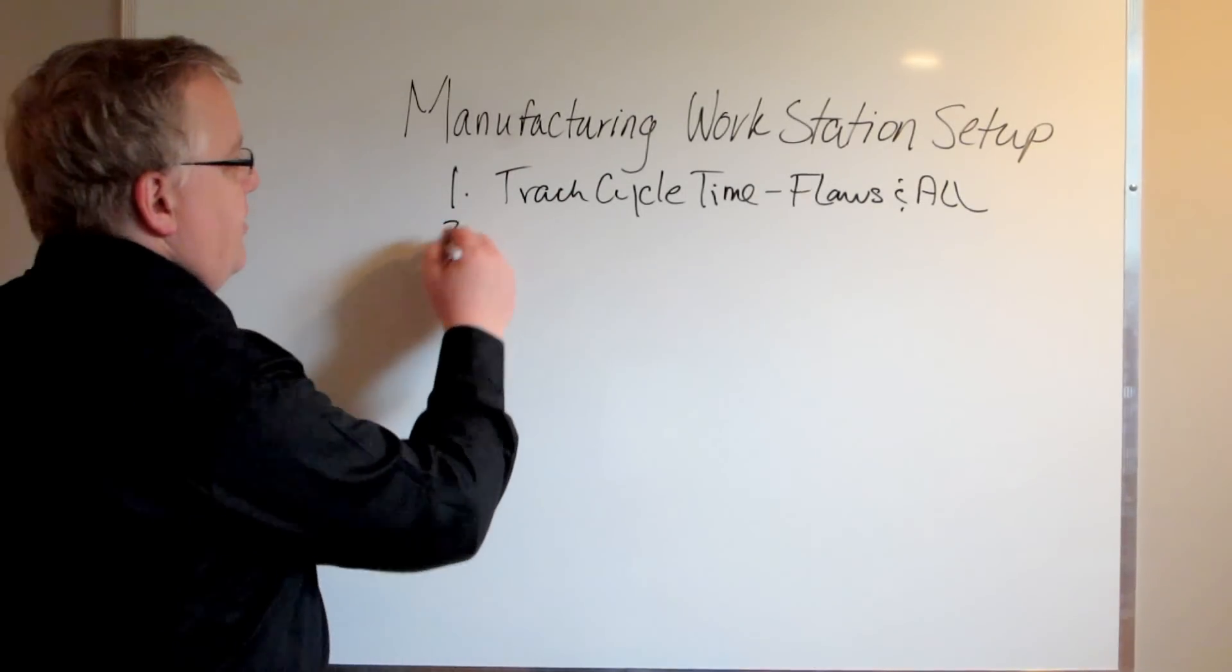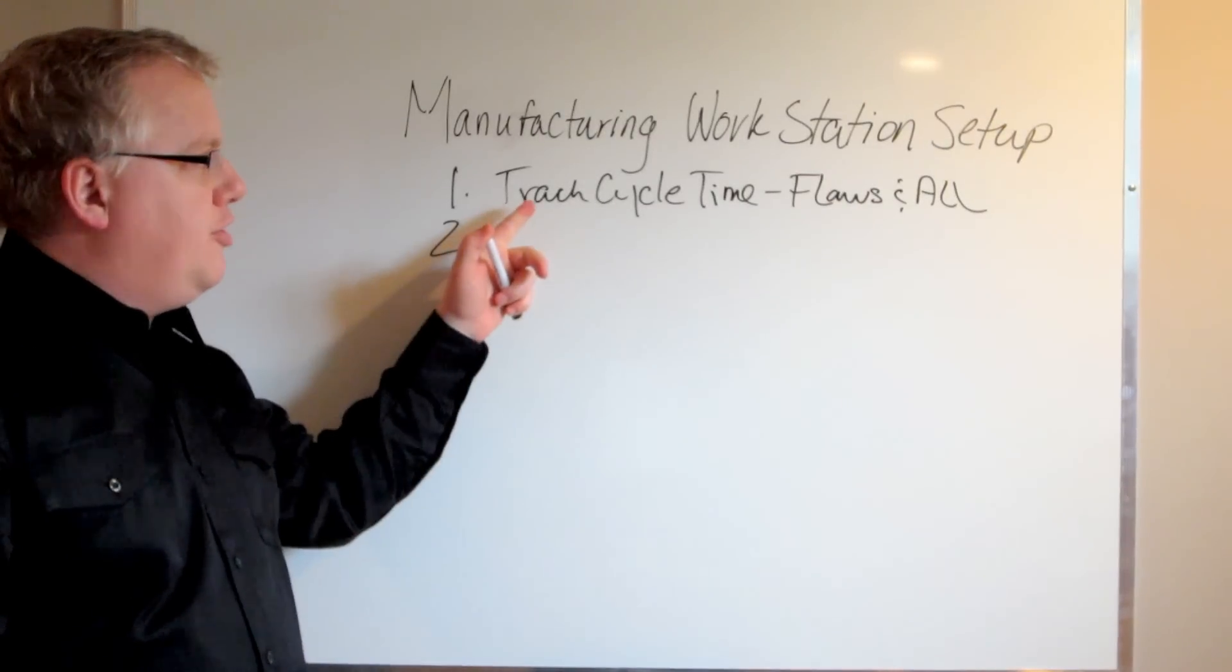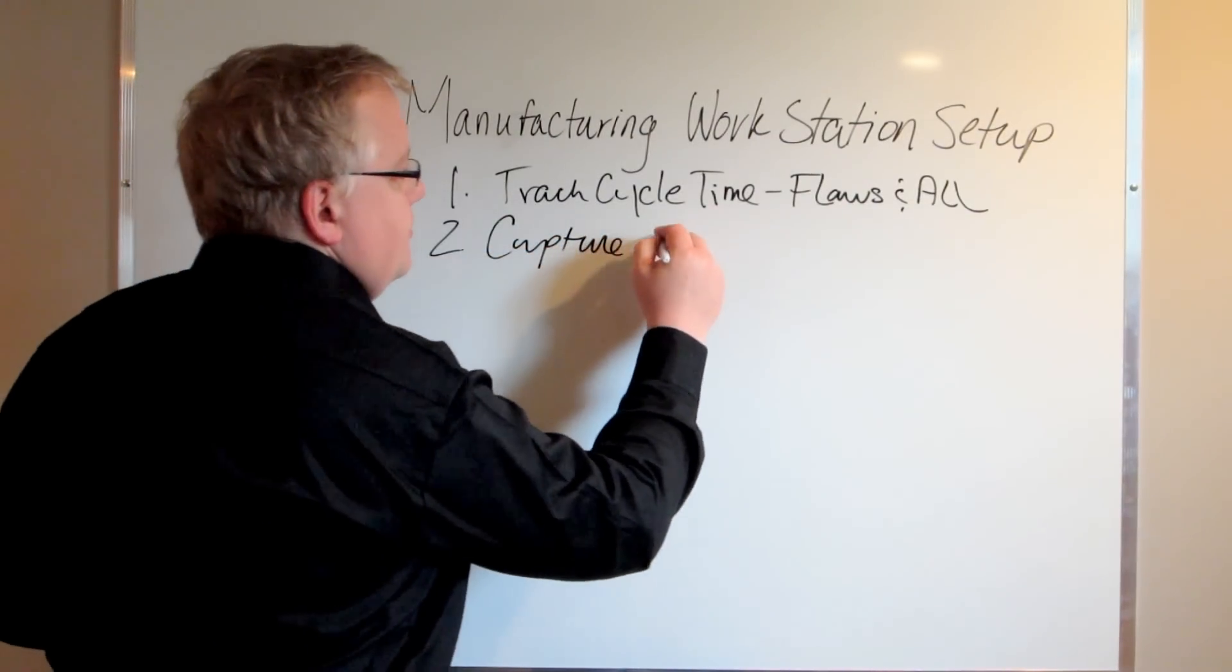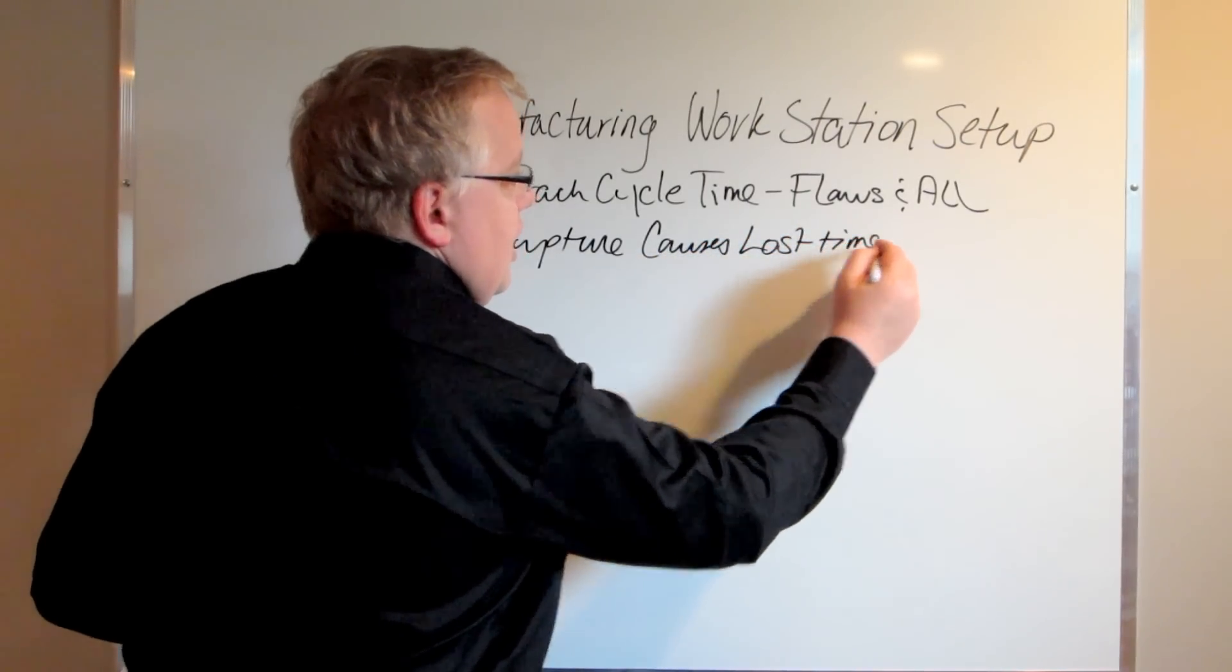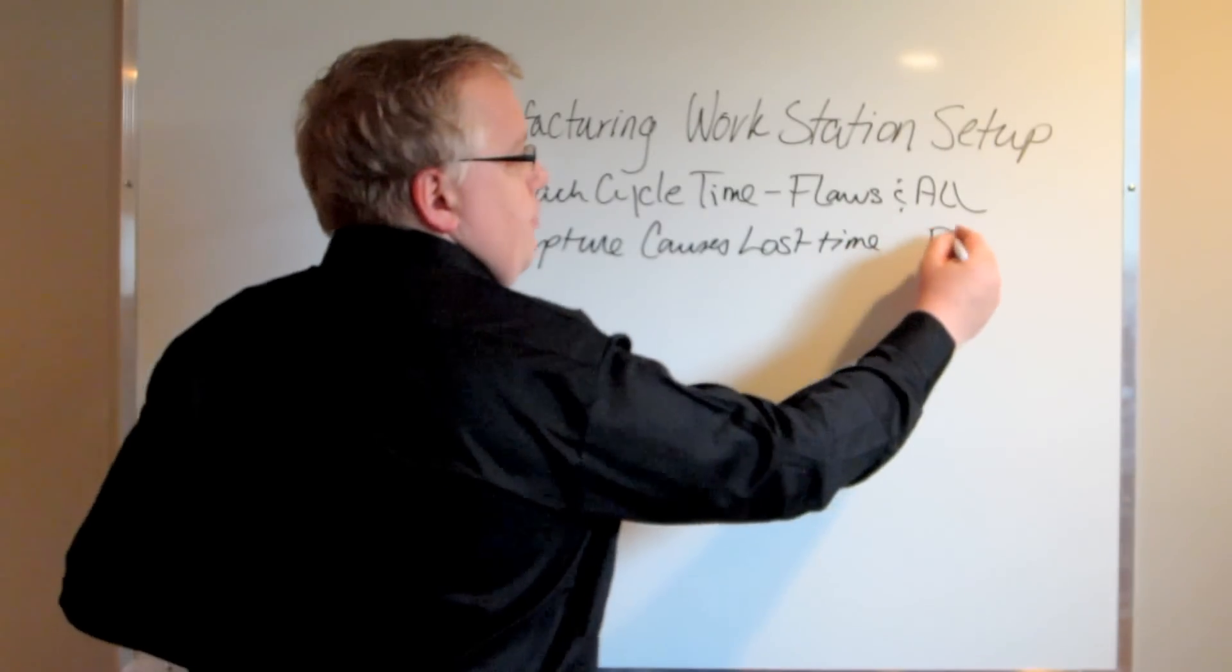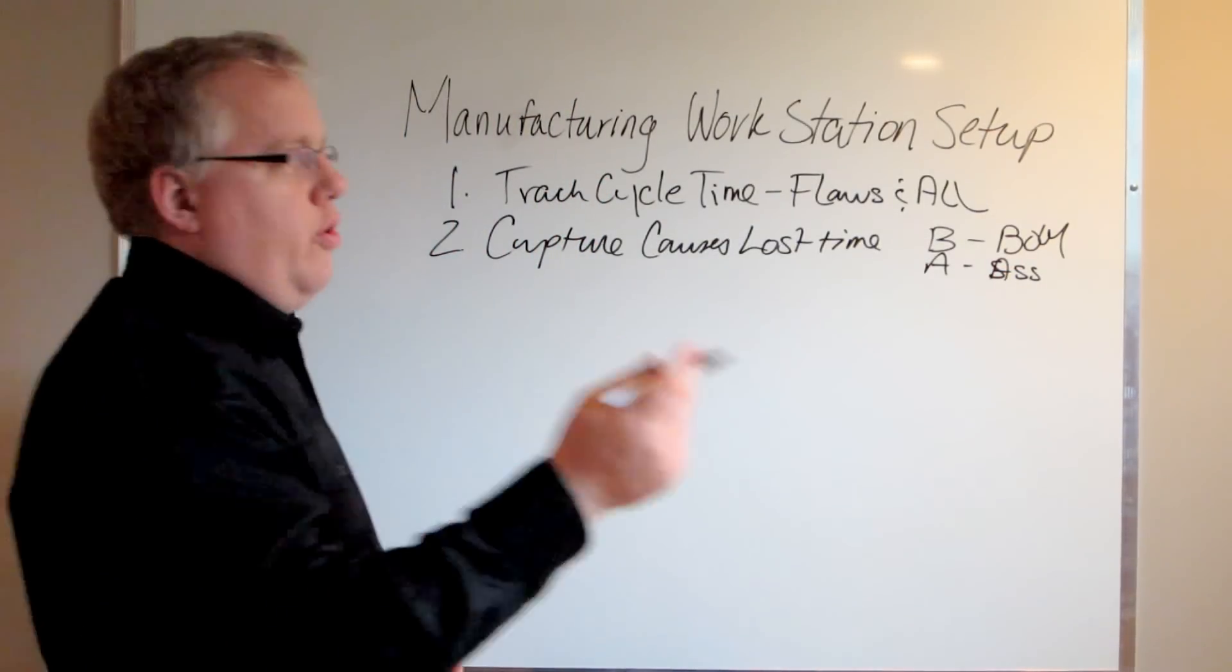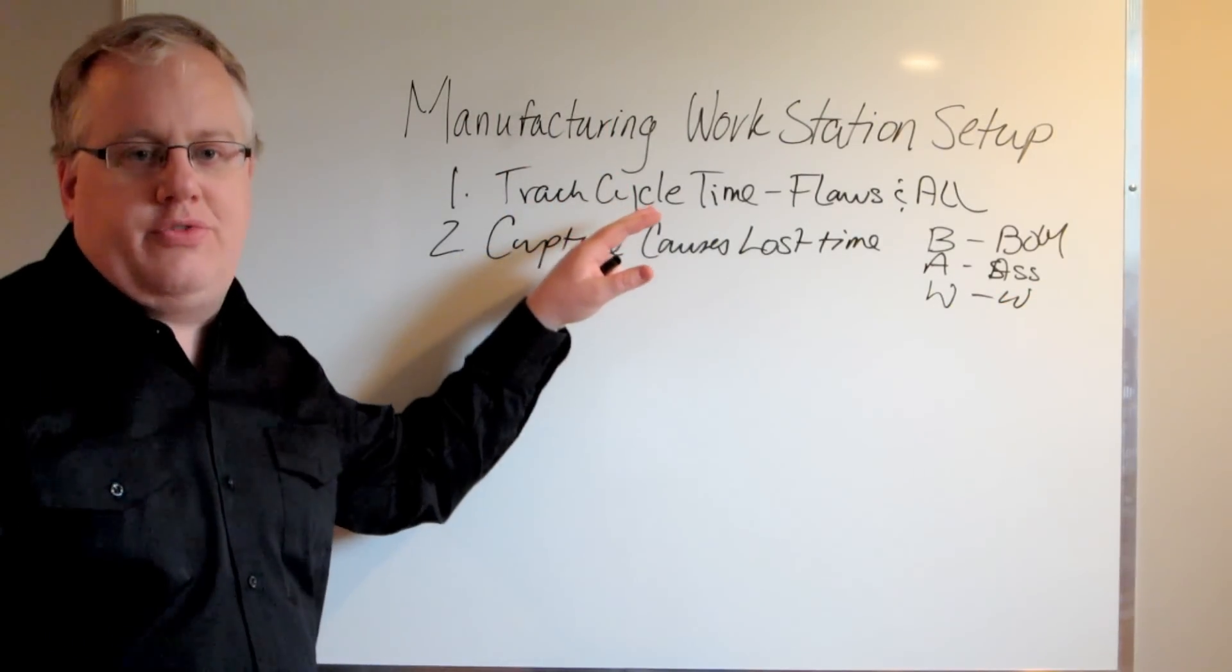The second step is after you've taken those first cycle times, as you're doing this you want to jot down what the causes of the lost time are as they occur. You want to capture the causes of lost time. Come up with your own little nomenclature, your own little code. You could write B for bill of materials, A for assembly drawings, W for improper work orders. Capture the causes of lost time as you're taking the individual cycle times.